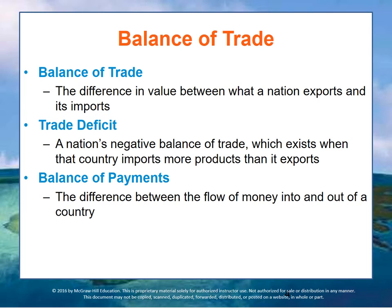Of course, when a nation exports more goods than it imports, it has a favorable balance of trade, or a trade surplus. Until about 1970, the United States had a trade surplus due to an abundance of natural resources and the relative efficiency of its manufacturing systems. The difference between the flow of money into and out of the country is called its balance of payments. A country's balance of trade, foreign investments, foreign aid loans, military expenditures, and money spent by tourists all constitute its balance of payments.